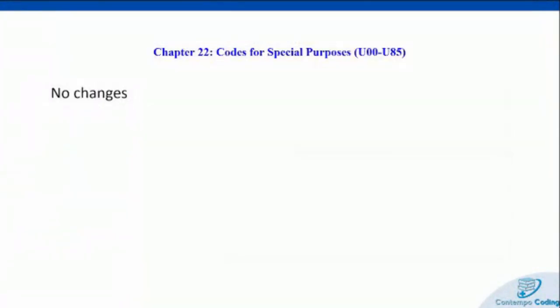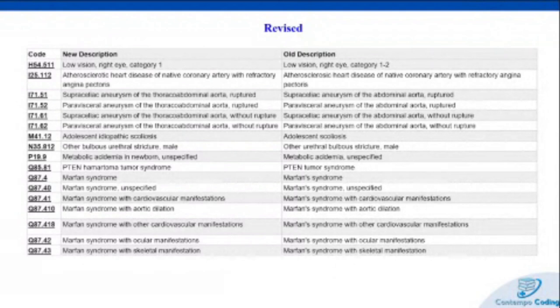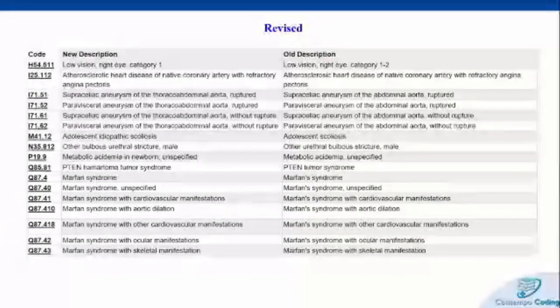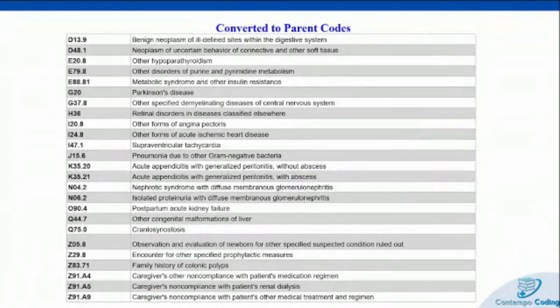That's it for code additions — let's get into the revisions. These are the revised codes; the right-hand column is the old description and the left-hand column is the new description. A lot of them were very minor changes, such as abdominal aorta is now thoracoabdominal aorta, and Marfan's syndrome was updated. These aren't significant — a lot of them were just very minor revision details. We also had these 25 codes that weren't necessarily deleted but are now expanded, requiring an additional character to be a full code. Things like craniosynostosis was converted to a parent code. Other forms of angina pectoris, I20.8, is going to need some additional characters. Parkinson's disease has been expanded, as have metabolic syndrome and insulin resistance.